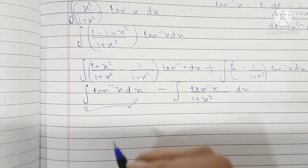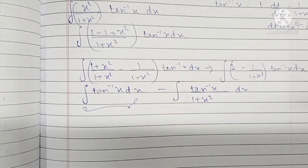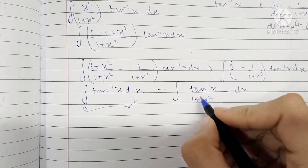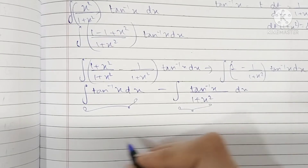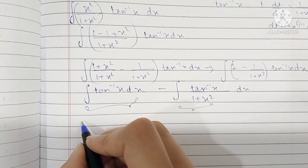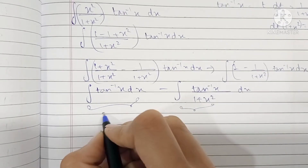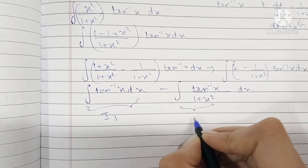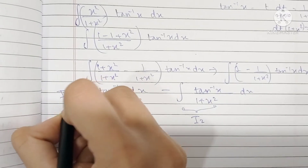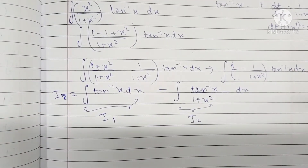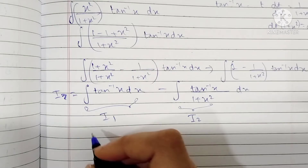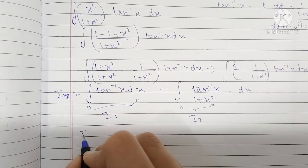This one we'll solve by parts and this one by substitution. Let's name them I₁ and I₂. Our entire answer I will be the difference I₁ − I₂. So we have I₁.